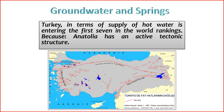6. Challenges in management — despite the abundance of groundwater, there are challenges related to over-extraction, pollution, and unsustainable use. Effective groundwater management and conservation measures are essential to ensure the long-term sustainability of these vital water resources. 7. Research and monitoring — ongoing research and monitoring initiatives help assess the health and sustainability of groundwater resources in Turkey, including studying the hydrogeological characteristics of aquifers and monitoring water quality. 8. Legislation and regulation — Turkey has established legislation and regulations to manage and protect groundwater resources. These measures aim to balance human needs with environmental conservation to maintain the health of aquifers and springs.